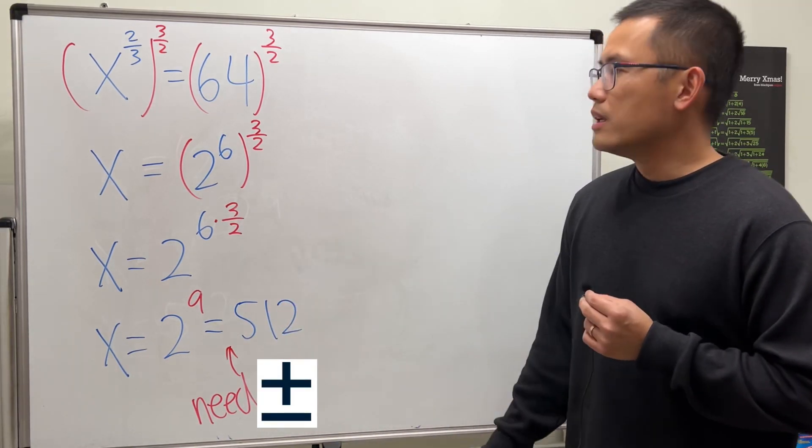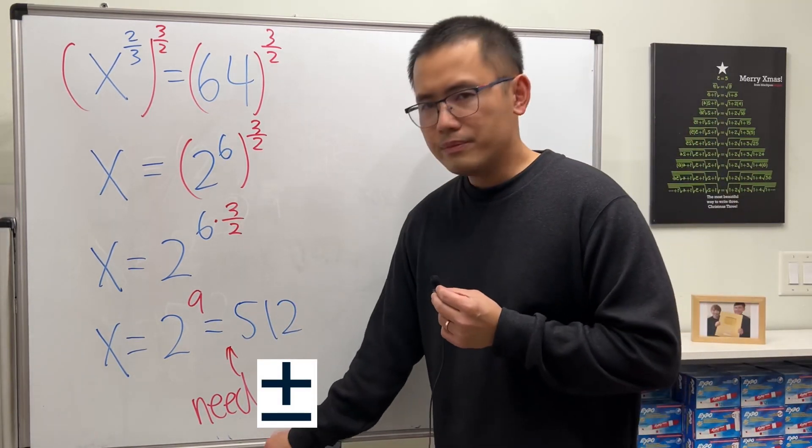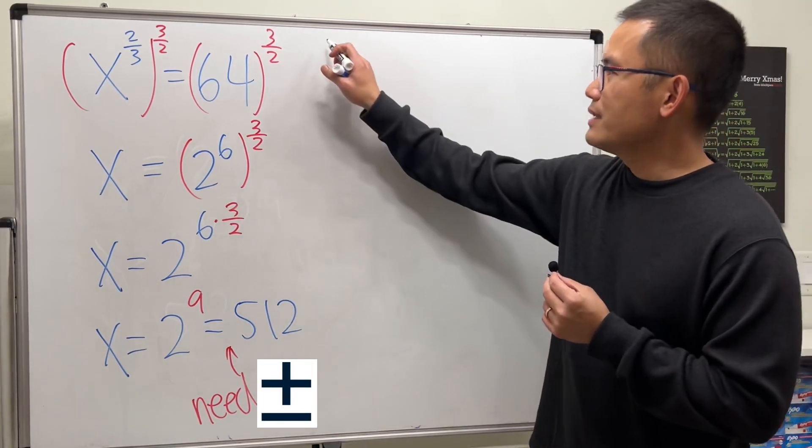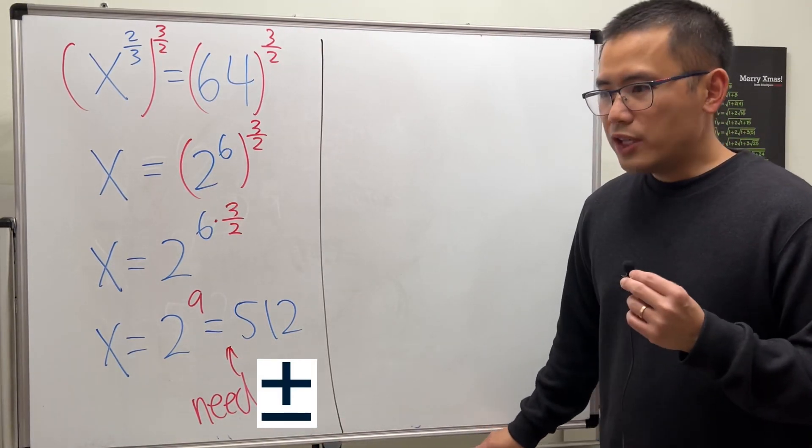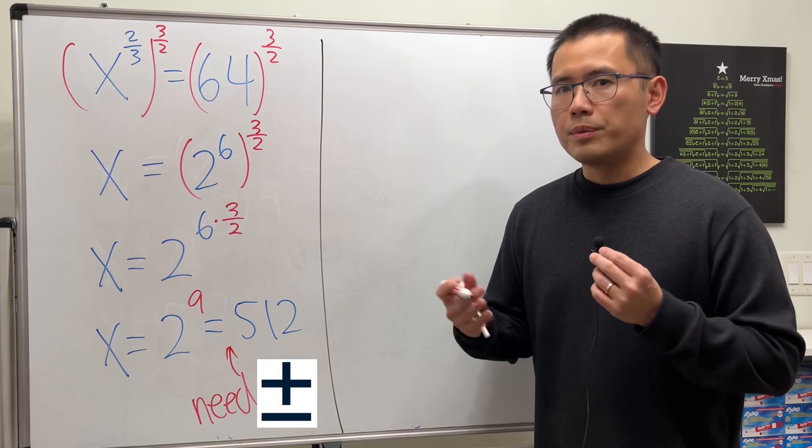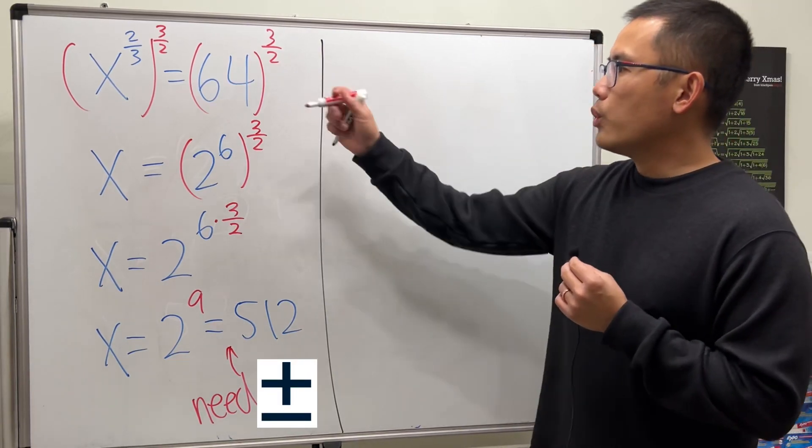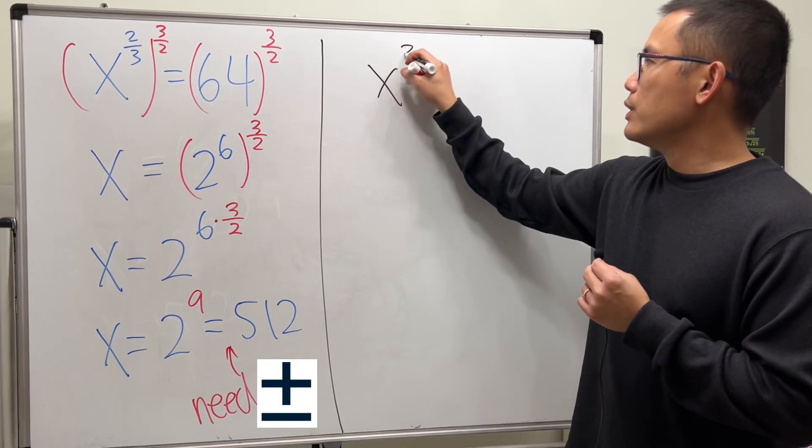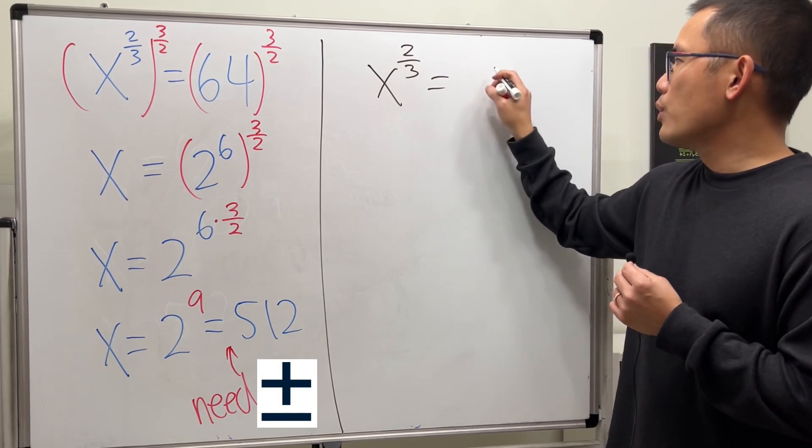So we're just missing the negative solution. So why is that though? It seems pretty good, right? Well, let me change this into the radical form and it will become much more clear. When we have x to the 2 over 3 power equals 64.